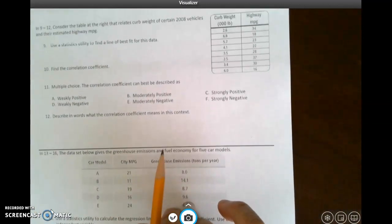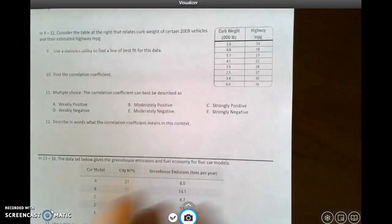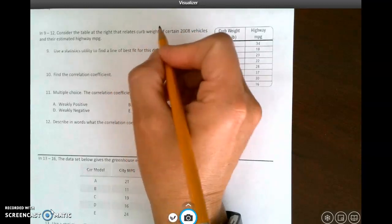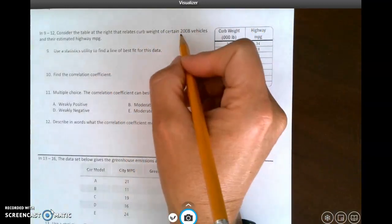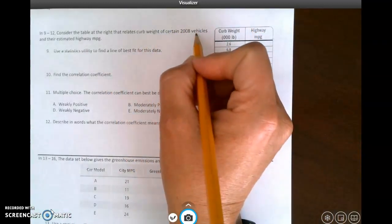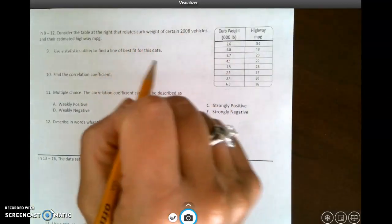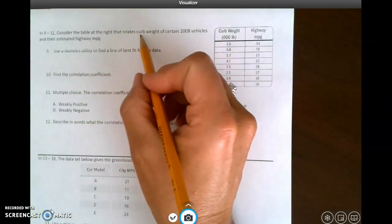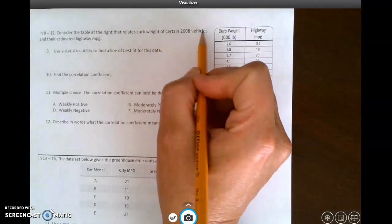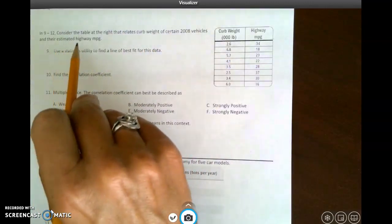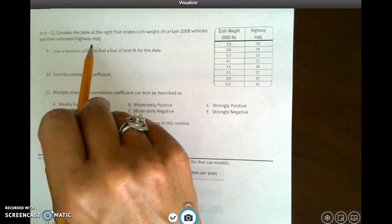In this example, questions 9 through 12 consider the table at the right that relates curb weight - that means when a car is just sitting there by the curb of certain 2008 vehicles and their estimated highway miles per gallon. They're trying to figure out, does the weight of a car have anything to do with how many miles per gallon it gets when you're driving?